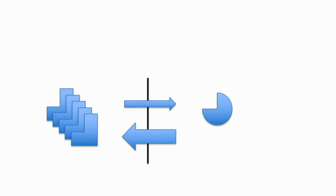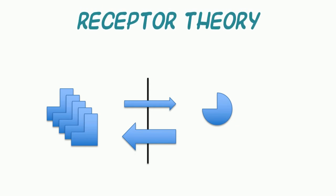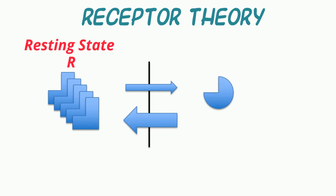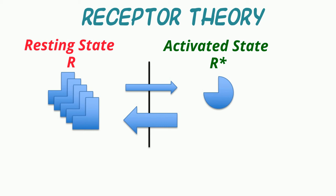Now let's examine how two compounds could bind to the same receptor connected to the same signal transduction system and lead to different maximal effects — that is, have different intrinsic efficacies. The simplest way to explain this is through what we call receptor theory, where receptors can be in two states: the resting state, or R, and the activated state, or R star, and these states are in equilibrium with each other but can be impacted by the type of drug that binds to them.